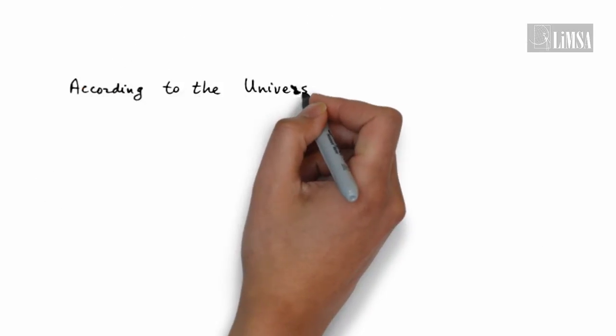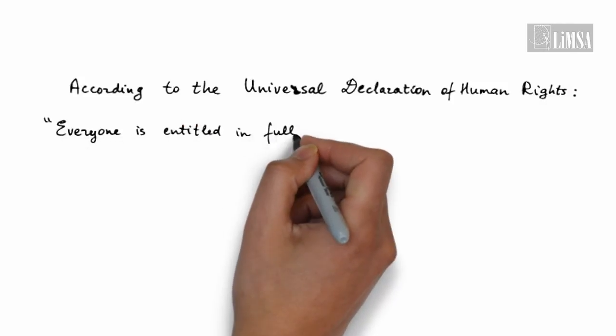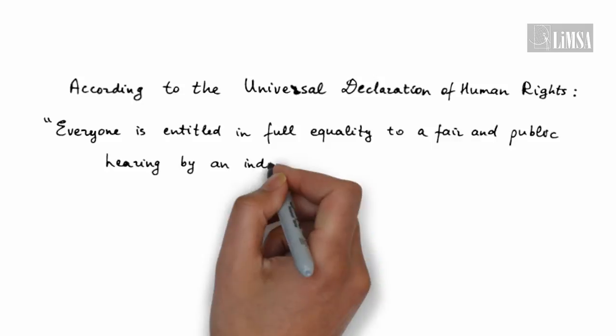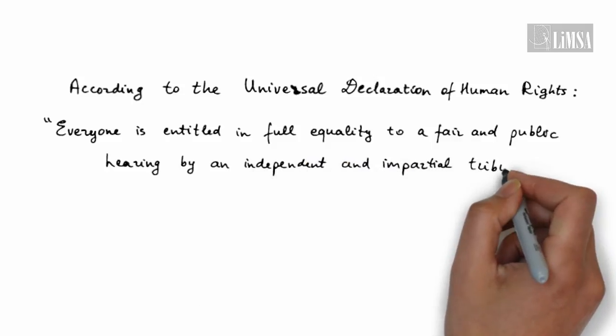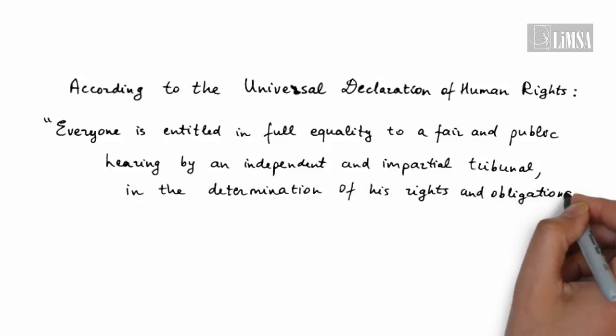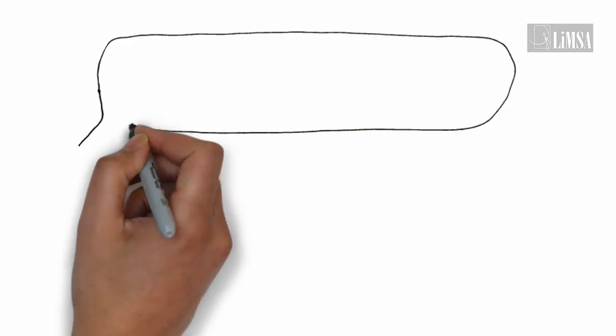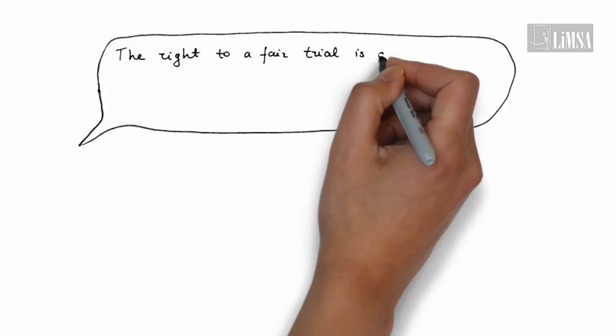According to the Universal Declaration of Human Rights, everyone is entitled to a fair and public hearing by an independent and impartial tribunal in the determination of his rights and obligations and of any criminal charge against him.